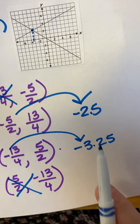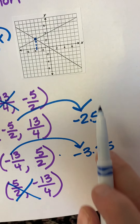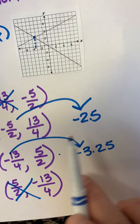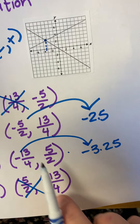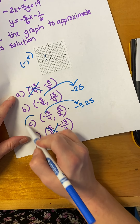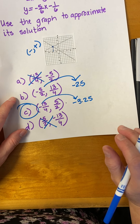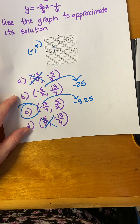The answer is C. Negative 3.25 is between negative three and negative four. I'm not even doing any more math — easy.